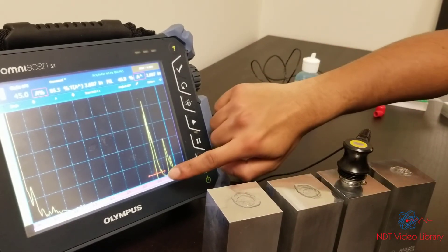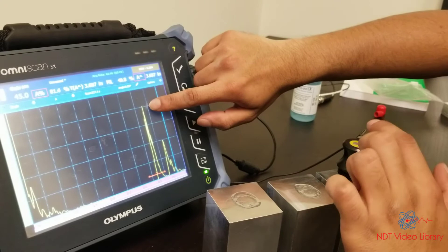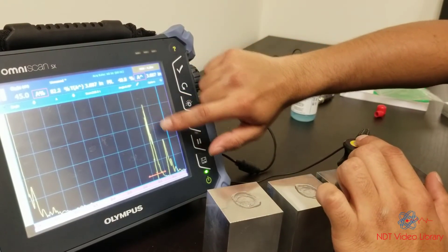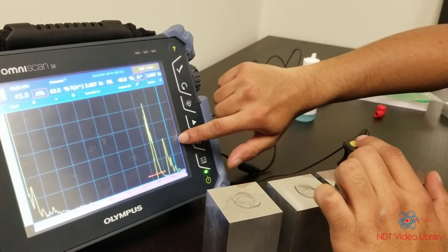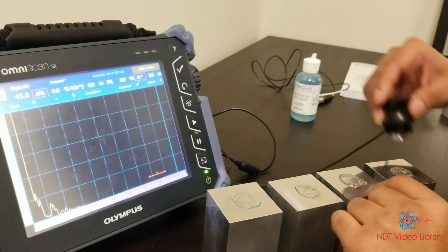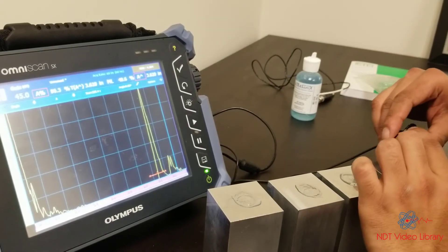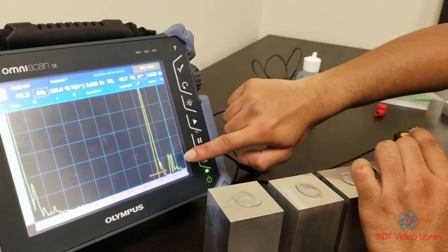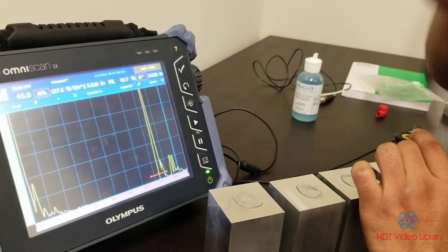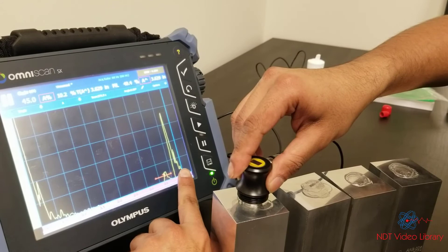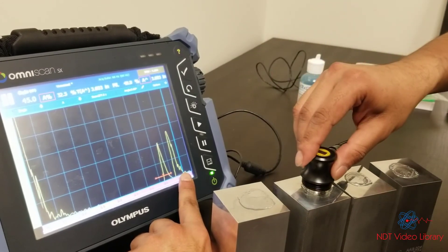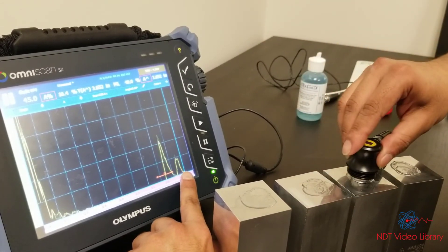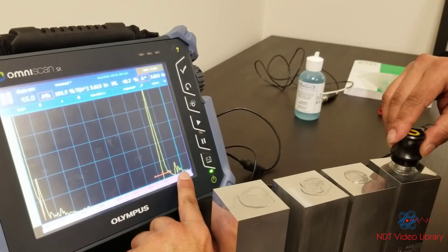In this block, you see the whole amplitude actually went to about 80%, whereas the back wall dropped to 40%. And when I move it to the last block, you can see the whole size went beyond 100%, whereas the back wall has dropped to almost 20%. That's number one, that's number two, that's number three, and that's number four.